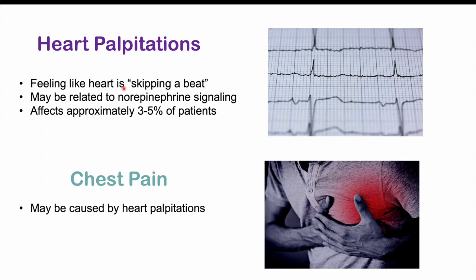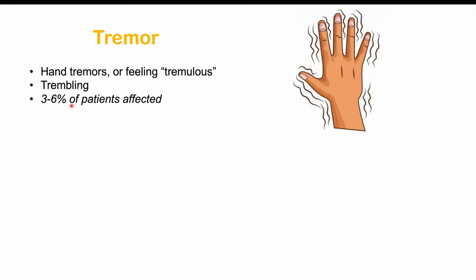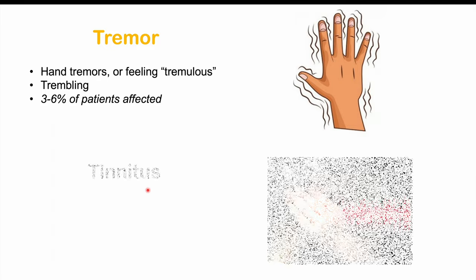Chest pain may be caused by the heart palpitations and can occur in three to six percent of patients. Tremors can also occur — feeling very shaky, hands having tremors, or feeling tremulous. This can occur in three to six percent of patients, and can be associated with anxiety, nervousness, and agitation, all likely due to increased norepinephrine signaling.